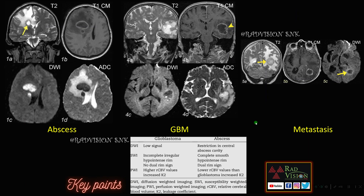Next case: diffusion weighted imaging also helps in differentiating abscess from necrotic or cystic tumors like GBM and even cystic metastasis. Whenever you have a cystic lesion in the brain with some perilesional edema and you are confused, try to use diffusion weighted imaging as one of the sequences to differentiate them. Here you can see this is the abscess where you can see restricted diffusion on DWI in the core with low ADC values.